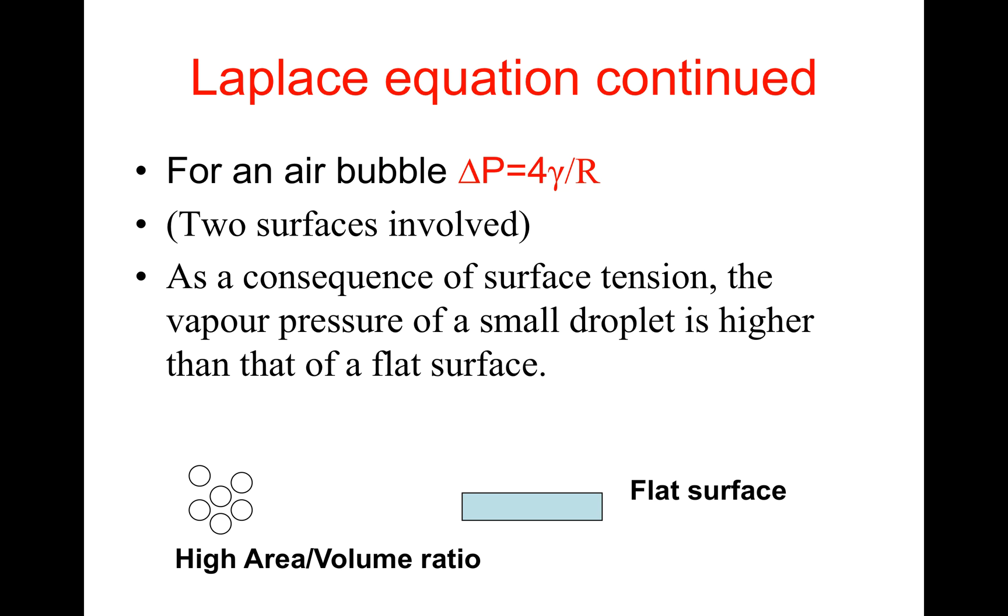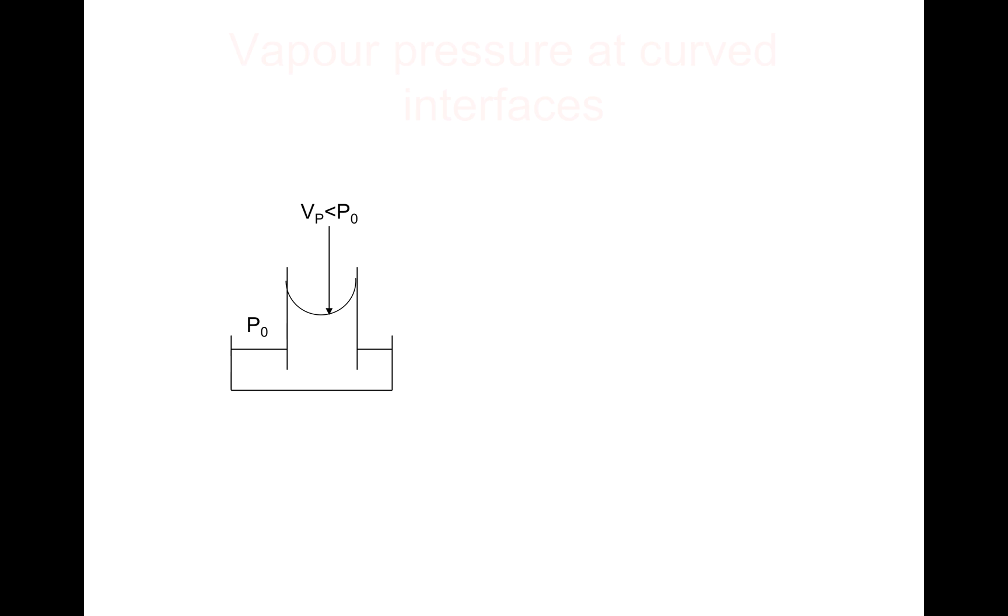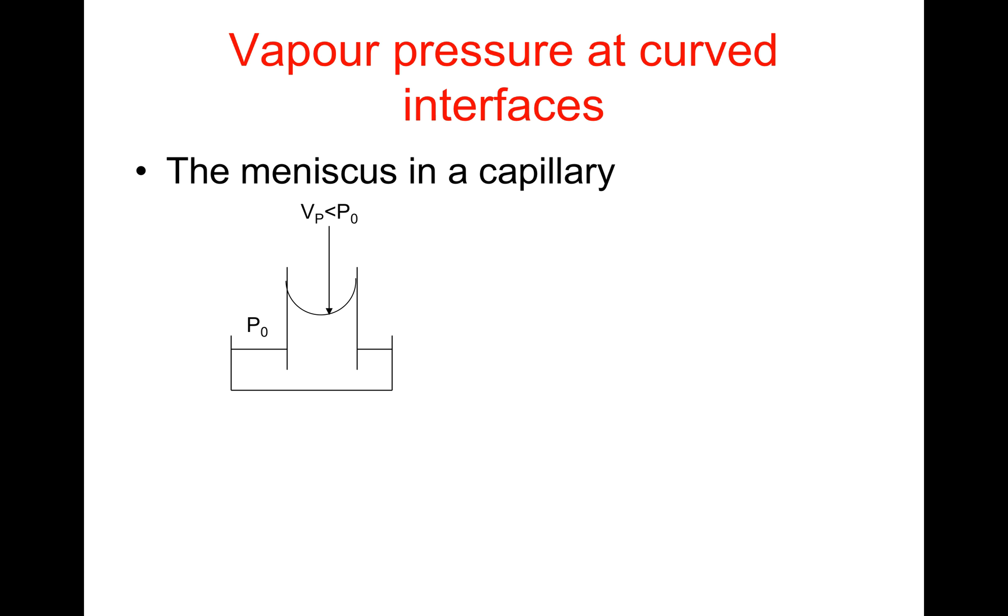As a consequence of surface tension, the vapor pressure of a small droplet is higher than that of a flat surface due to high surface area to volume ratio. So V_p is greater than P₀ for droplets, whereas for flat surfaces V_p equals P₀. Look at that diagram. We have a capillary immersed into a liquid. The pressure above the flat part of the liquid is P₀, but the pressure at the curved interface V_p is less than P₀. This is at the meniscus as shown in the diagram.